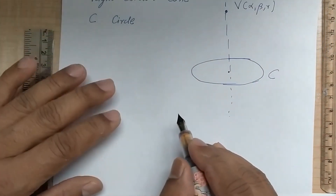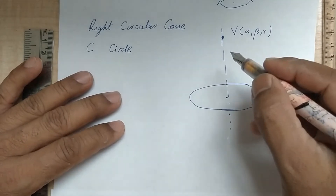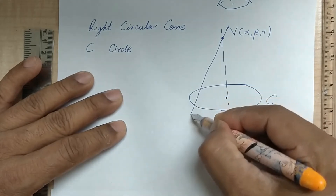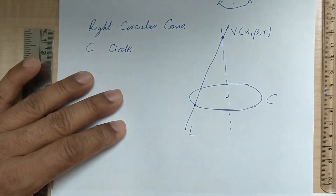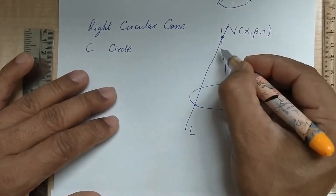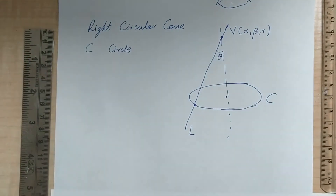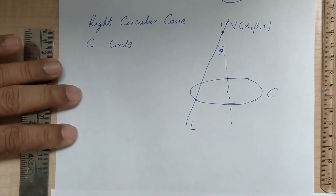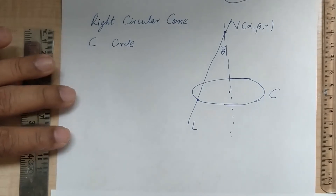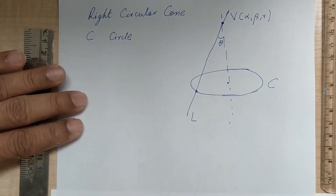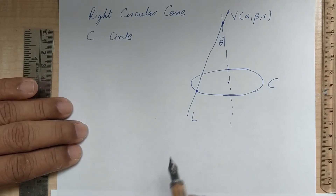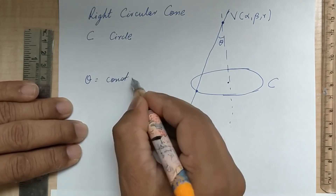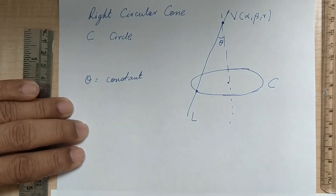Let us draw a generator. I have the guiding curve as the circle C. This point denotes the center, and we look at a line passing through the center — the vertex V is a point on this line at (alpha, beta, gamma). Suppose the generator L makes an angle theta with the axis. Now, theta is a constant for the right-circular cone.